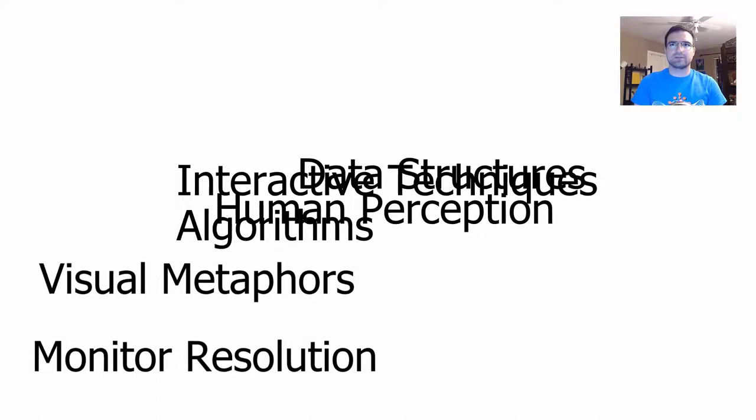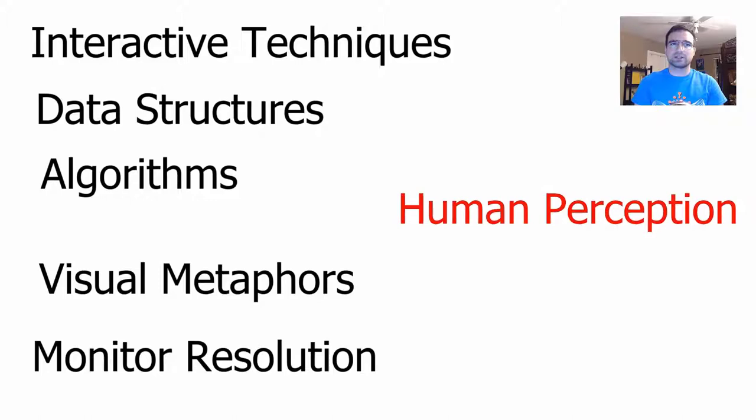Showing a large number of data points as marks is a challenge in any visualization design. ICAN-CAR categorized scalability challenges into six categories: monitor resolution, visual metaphors, interactive techniques, data structures, algorithms, and human perception. Yet human perception, and in particular the effects of cognitive load, is understudied in graph visualization.